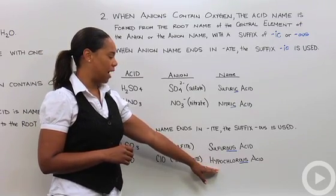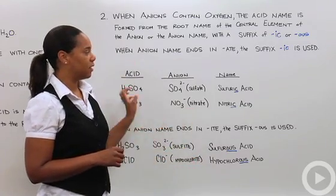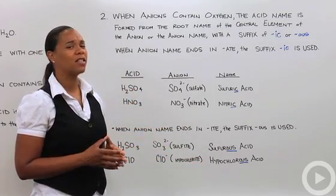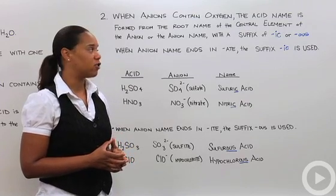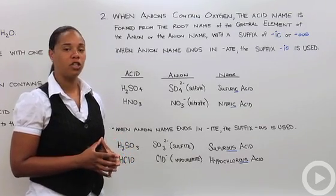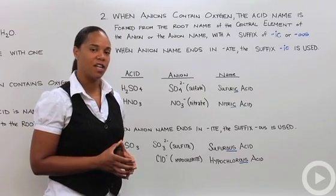Within this naming of acids, there are about 10 or 15 pretty common strong acids that you'll probably need to know and understand how to name. I encourage you to look those up and work on that skill. And that's naming acids.